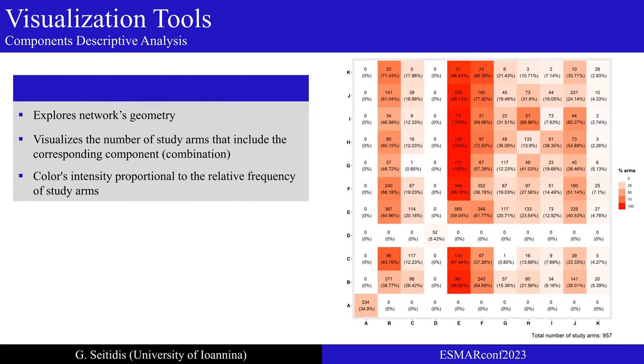Exploring the geometry of the network is essential, especially when you are dealing with large networks with complex structures. Components' descriptive analysis can assist in achieving this goal. By visualizing the component's frequency in a colored cross table, the analyst can easily identify the most frequent components or combination of components in the study arms. Each element denotes the number of study arms where the corresponding component or combination is part of the intervention. Diagonal elements refer to components and in parentheses the proportion of study arms that include the underlying component is presented. Off diagonal elements refer to components and in parentheses the proportion of study arms with both components out of those study arms that include the component in the row is presented. For example, the element that corresponds to column E and row H indicates that 133 study arms include these components, but also that component E is always included in the interventions that include component H.